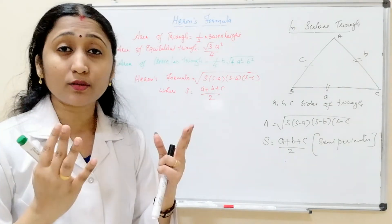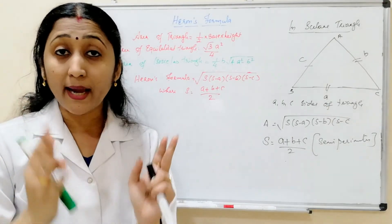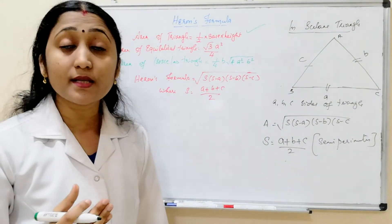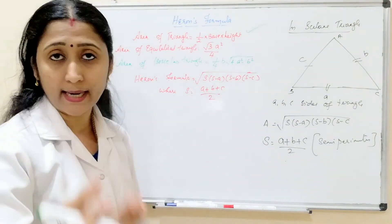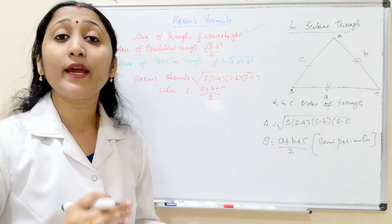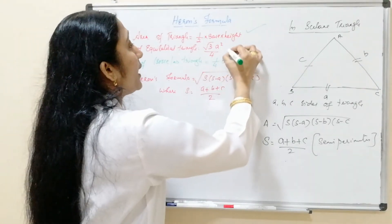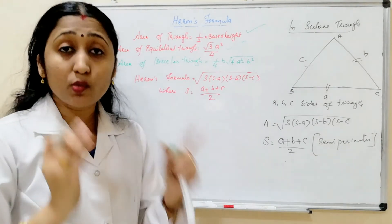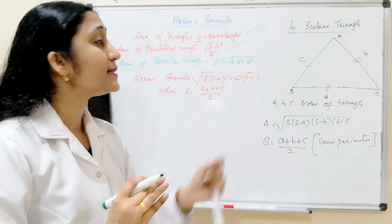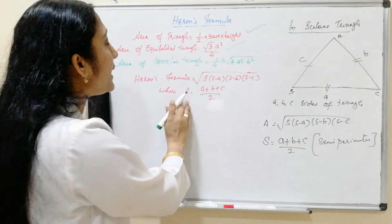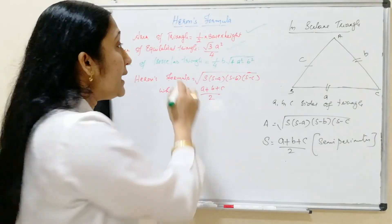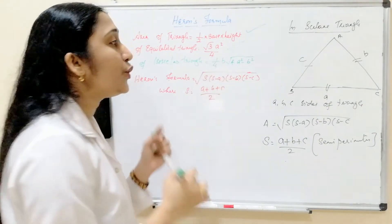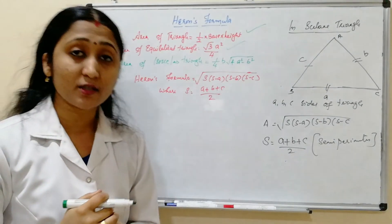In this video, I conclude that you have to memorize only three formulas. First, area of triangle equals half into base into height. Second, area of equilateral triangle equals root 3 by 4 times A squared. Third, Heron's formula: the square root of s times (s minus a) times (s minus b) times (s minus c), where s equals (a plus b plus c) by 2. For the isosceles triangle formula — (1/4) into b into the square root of (4a squared minus b squared) — there is no need to memorize it.